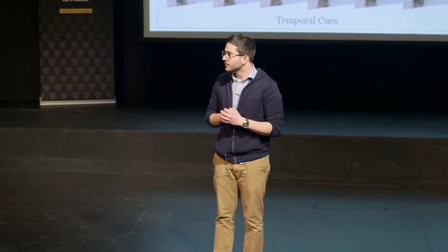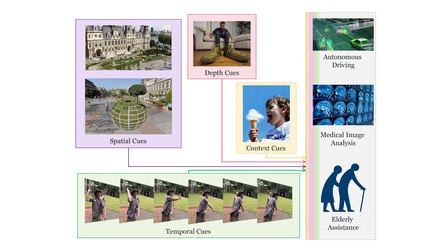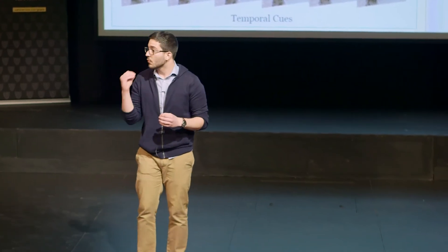Temporal cues. If you just take one frame from this video, you wouldn't know if this guy's throwing the ball or if this guy's catching the ball. But it all makes sense when you see the sequence. And using recurrent neural networks, we can give our algorithms the ability to understand time.